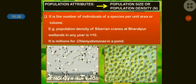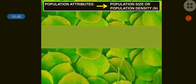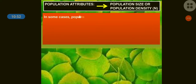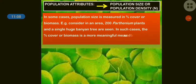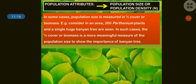Another example is millions of Chlamydomonas in a pond. The right side image shows Chlamydomonas in a pond — a small area of fresh water bodies — where the number of Chlamydomonas is in the millions. This is calculated volume-wise in a pond. In some cases, population size is measured in percentage cover or biomass.